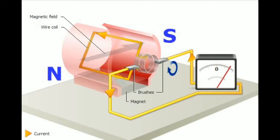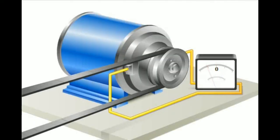During the other half of the turn, the current flows in the opposite direction, since the wires are moving through the field in the opposite way. This changing of direction during each cycle is why this type of current is called alternating current.